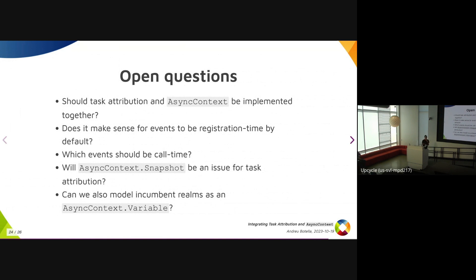Will AsyncContext.Snapshot be an issue for task attribution, especially when you're talking about things like changing the priority to which things in third-party scripts which are known or suspected to be malicious run? If that script has access to AsyncContext.Snapshot which comes from a non-malicious script, that would be an issue. And that is, it's not like that's not currently possible to do, but it would become very much an API that would directly let you do that rather than having to hook up async continuations and so on.